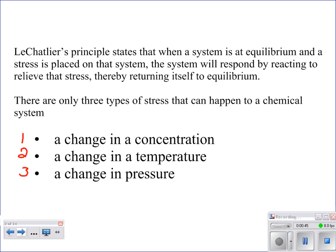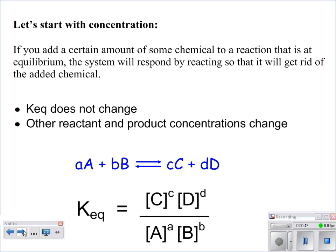Our first example is a change in concentration. If you add a certain amount of some chemical, that system is going to respond by trying to get rid of that chemical — relieving that stress. As a reminder, you calculate K, or K-eq, the equilibrium constant, as the concentration of your products raised to the power of their coefficients divided by the concentration of the reactants raised to the power of their coefficients.